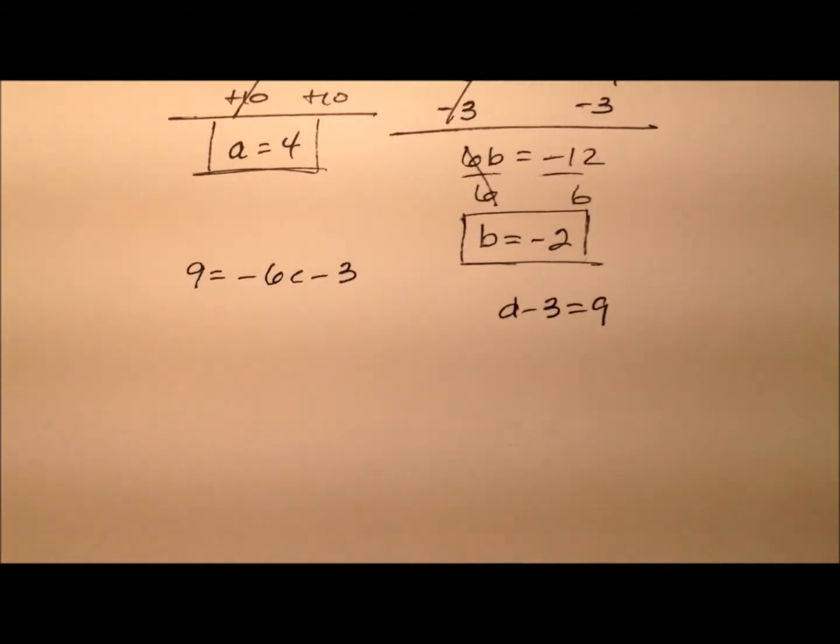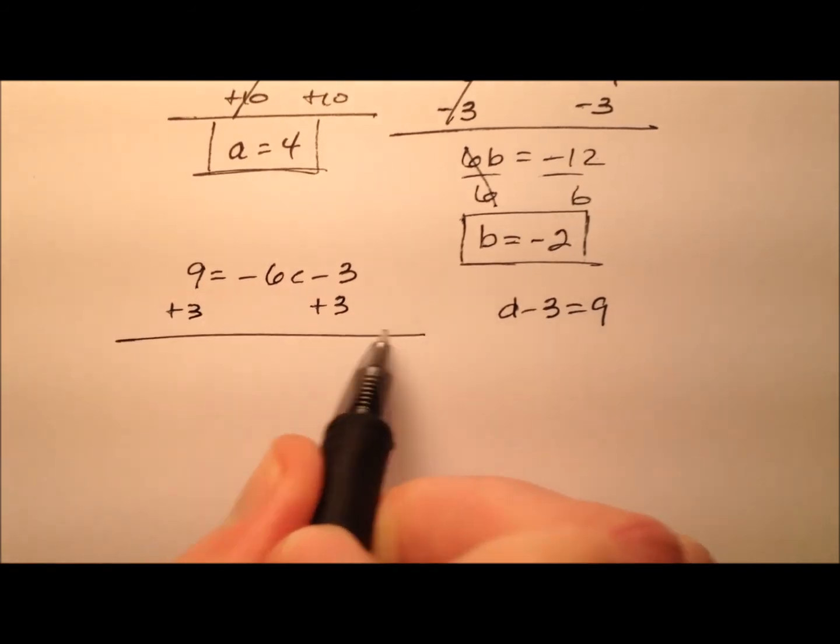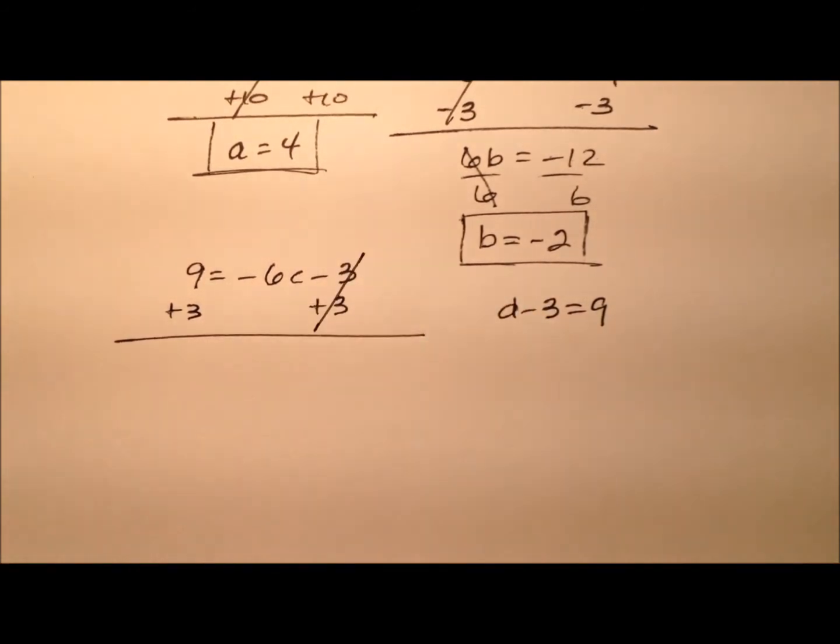So let's go ahead and solve these final two. We can start by adding 3 to both sides in an effort to get this C all by itself. So it looks like 12 equals negative 6C. So when I divide both sides by negative 6, the C is isolated on that right side all by itself. And we see that C will equal negative 2.